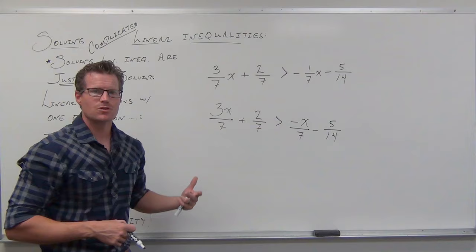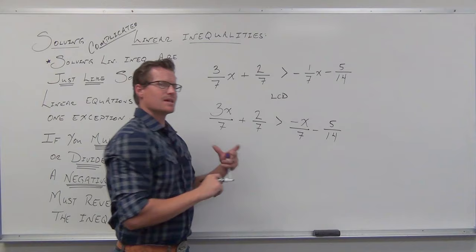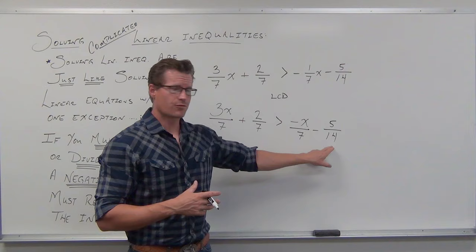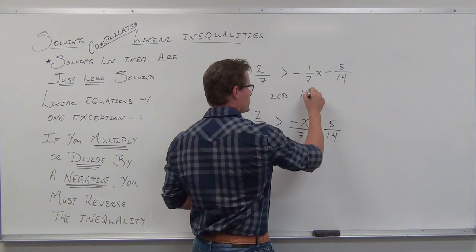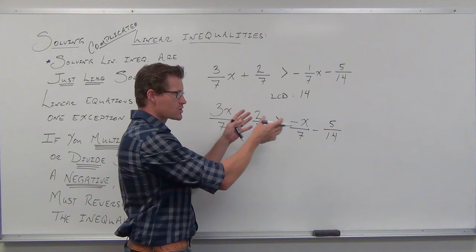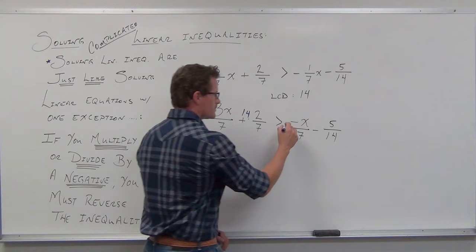So we write everything as a fraction and find the LCD. The LCD here — it's not 7; it's the smallest multiple that everything divides into. Start with the largest denominator: try 14 — 7 divides 14, so the LCD is 14. We multiply every single term — all four of them, both sides — by the LCD. Did you just multiply both sides? Sure. Did you multiply both sides by a negative? Absolutely not. If you follow my steps and put negatives on numerators, you never will. So you should not be changing your inequality when getting rid of fractions.